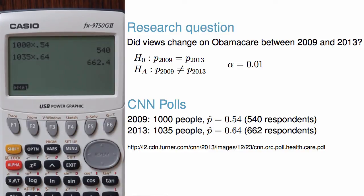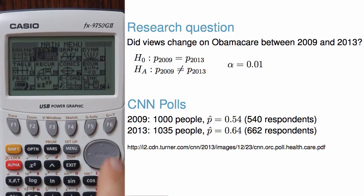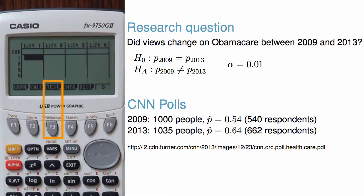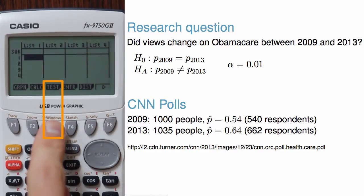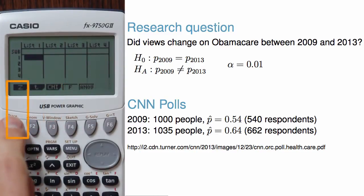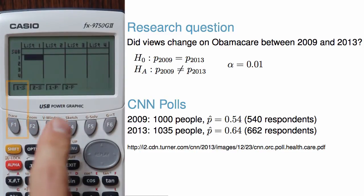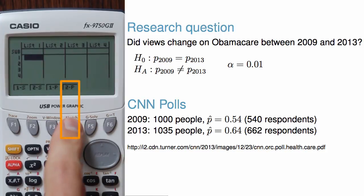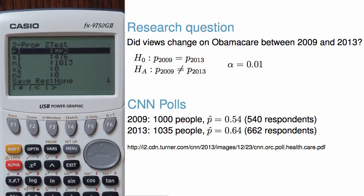We've verified the conditions for this sample are satisfied so that we can move ahead with conducting the hypothesis test. To conduct a hypothesis test using a Casio calculator, go to Menu, then to Stat, choose F3 for hypothesis test, then Z, and finally select 2P for two proportions.